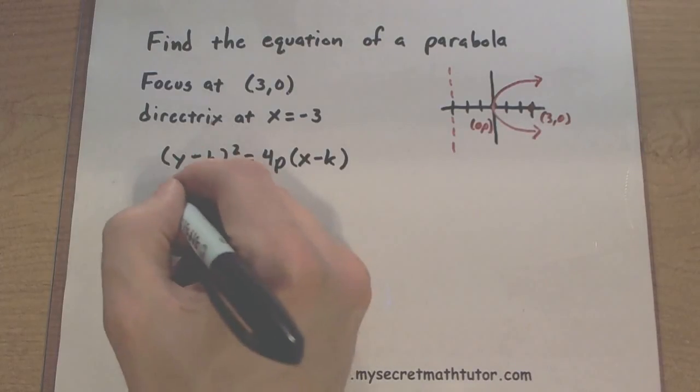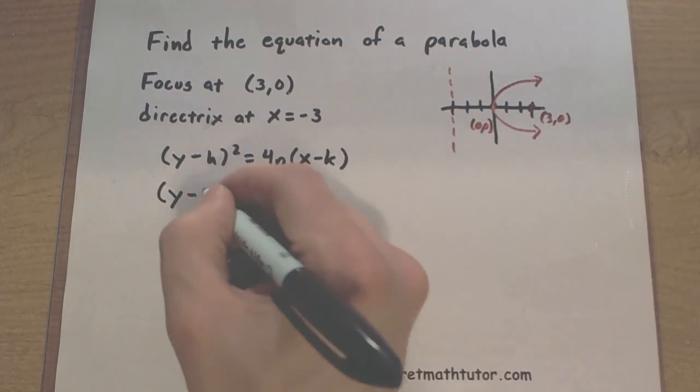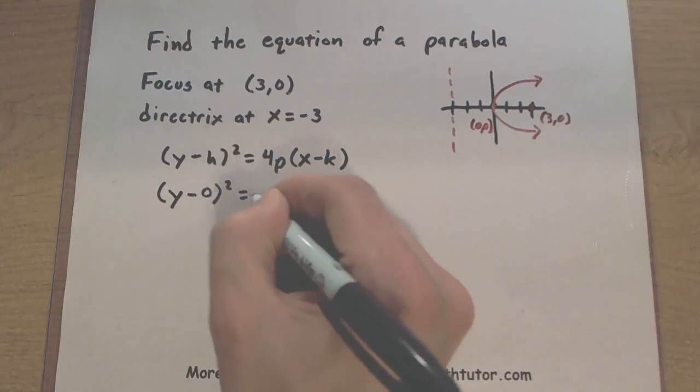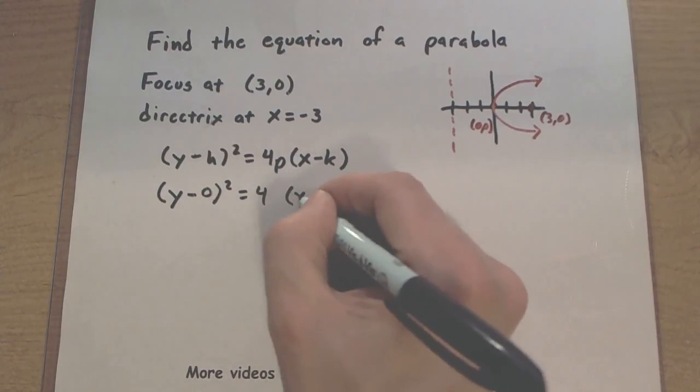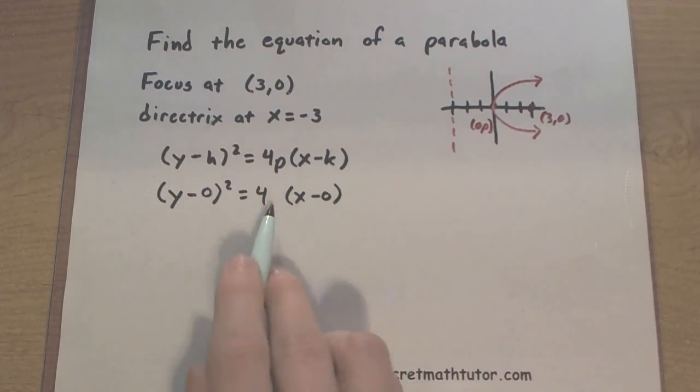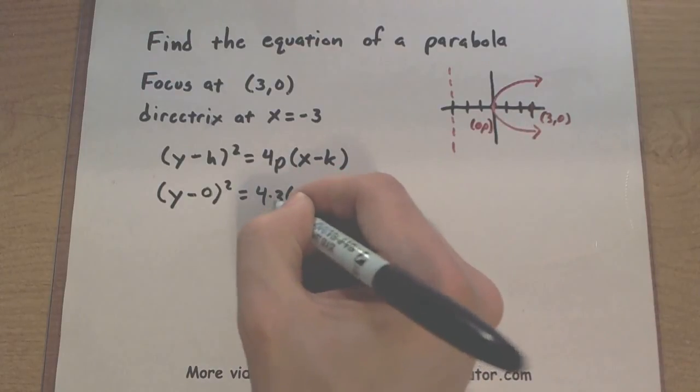So let's go ahead and put in all of our information here. So the vertex is located at 0, 0. That'll make things nice. And this p value, again, is the distance between the focus and the vertex. So it looks like it's just 3 away, so 4 times 3.